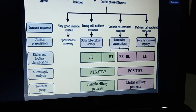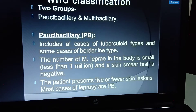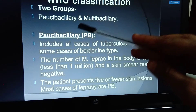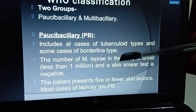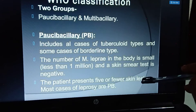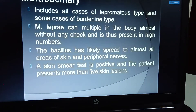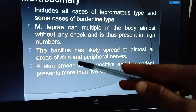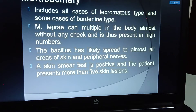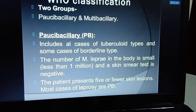The World Health Organization defines two types: pauci-bacillary and multi-bacillary. In pauci-bacillary, the skin smear test is negative and the patient presents five or fewer skin lesions — corresponding to tuberculoid type. In multi-bacillary, the skin smear test is positive and the patient presents more than five generalized lesions, as seen in lepromatous leprosy.